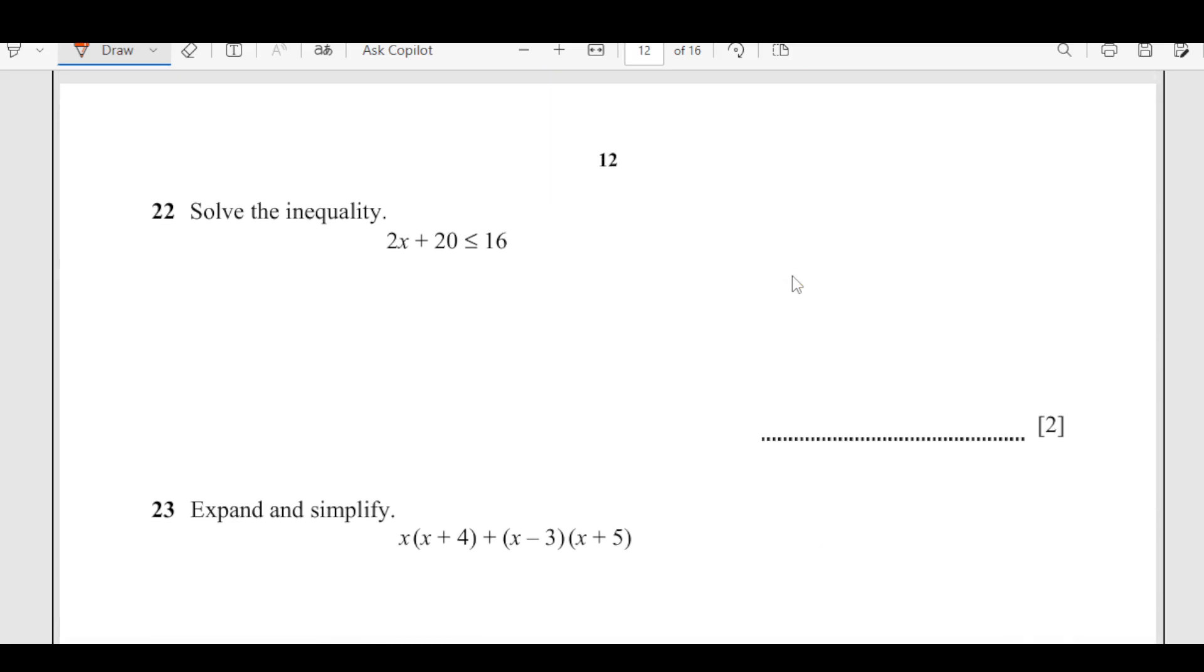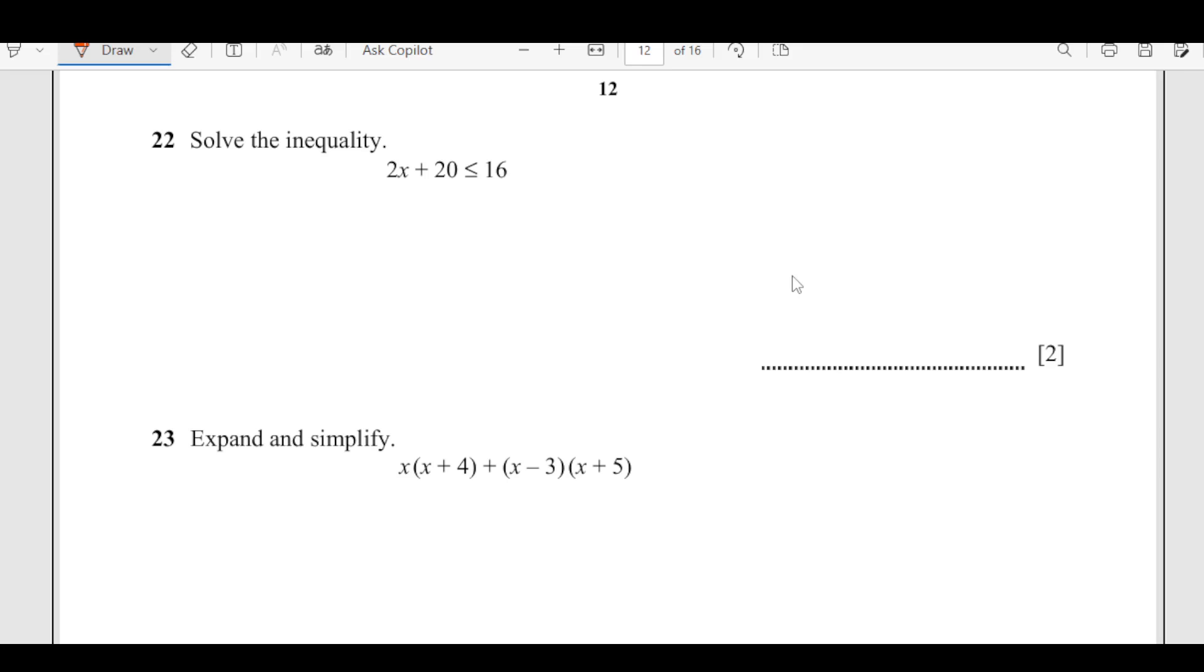Number 22, solve the inequality. We have 2x plus 20 less than or equals to 16. 2x will be less than or equals to 16 minus 20. That means 2x is less than or equals to minus 4, and x is less than or equals to minus 2. That is the final answer.